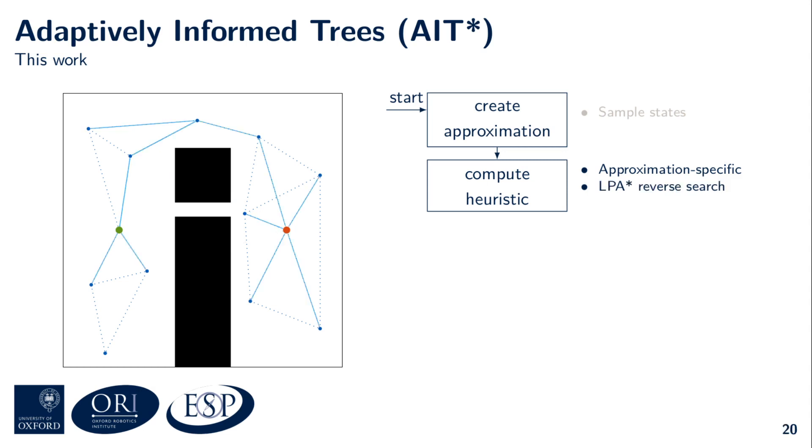AIT* uses an LPA* search from the goal to the start to estimate more accurate cost-to-go heuristics for each sampled state. This reverse search is illustrated in light blue and does not perform collision detection. It is therefore computationally cheaper than the forward search, which is what makes this bidirectional search asymmetric.